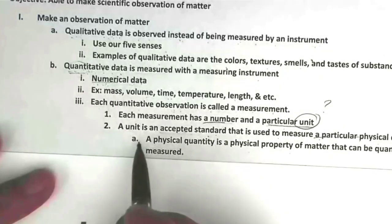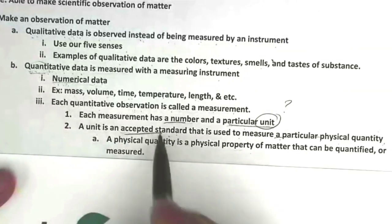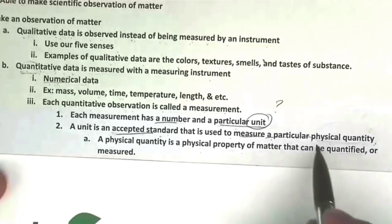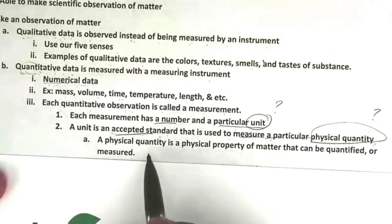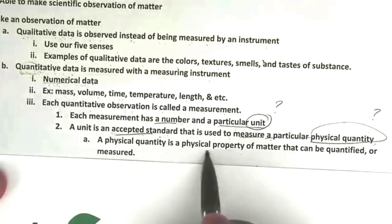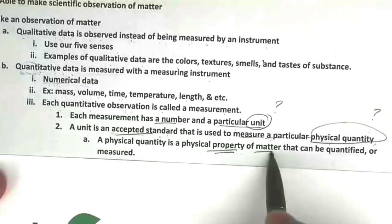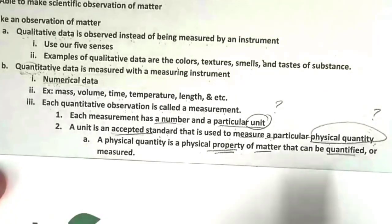A unit is an accepted standard that is used to measure a particular physical quantity. And what is physical quantity? A physical quantity is a physical property, and substances have properties that can be quantified, think of number, of course, or measured.